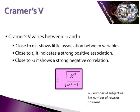Cramér's V: the size of the chi-squared coefficient depends on the strength of the relationship and the sample size. Cramér's V eliminates sample size by dividing chi-squared by n, the sample size, and taking the square root. Like Phi, Cramér's V varies between zero and one and shows the same levels of correlation.